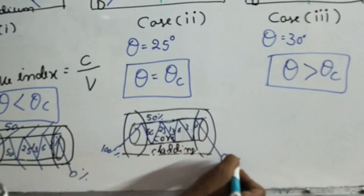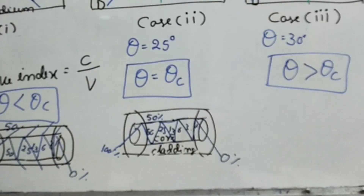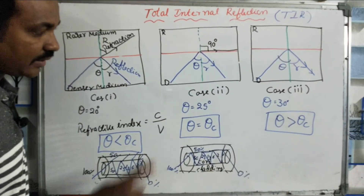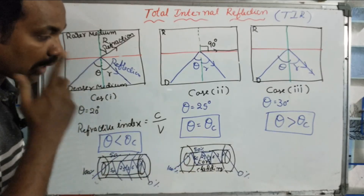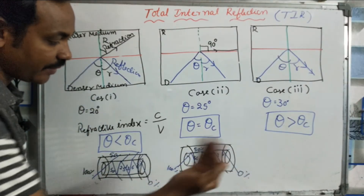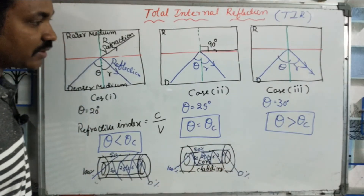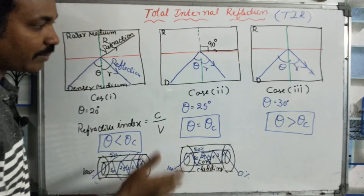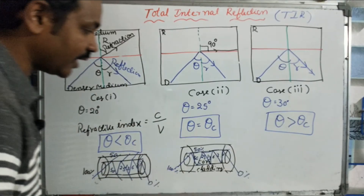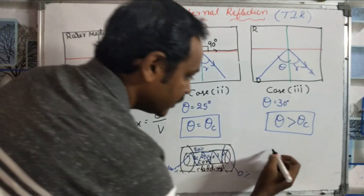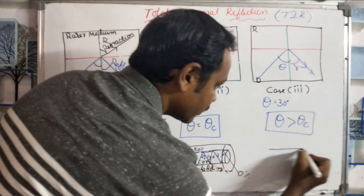When the angle is less than the critical angle (case 1), zero percent of the signal is transmitted efficiently. At exactly the critical angle (case 2), signal is partially transmitted. When the angle is more than the critical angle (case 3), 100 percent of the signal is transmitted inside the optical fiber via total internal reflection.